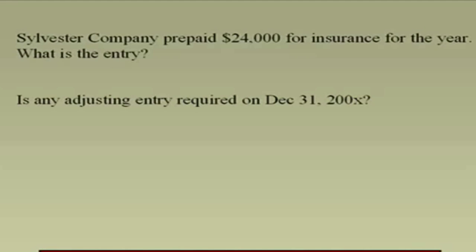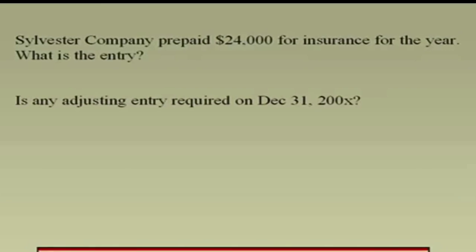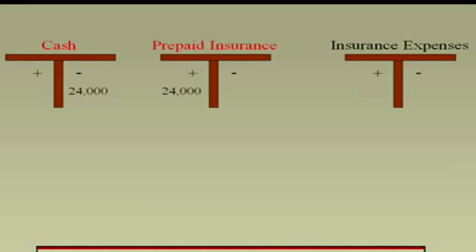Silver Vista Company prepaid $24,000 for insurance for the year. The entry is: cash goes down and prepaid expense goes up. On December 31st, would an adjusting entry be required? Right now it's an asset because the insurance company owes you. At the end of the year, do they still owe you? No, because they provided you with the service.